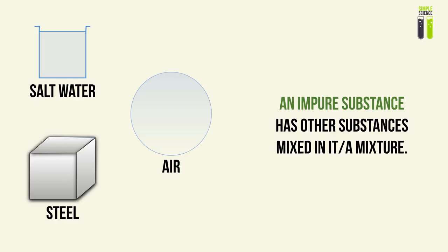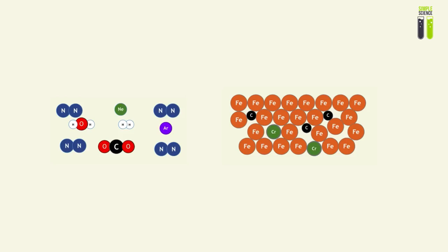For an impure substance, there are other substances mixed in — it can be a mixture or an alloy. Salt water, for example, is a dissolved mixture of water and salt. Steel is an alloy of carbon and iron, possibly with other elements. Air is a mixture of gases. At the atomic scale, there are many types of molecules within a given volume — for example, air contains nitrogen, water molecules, and other gases.